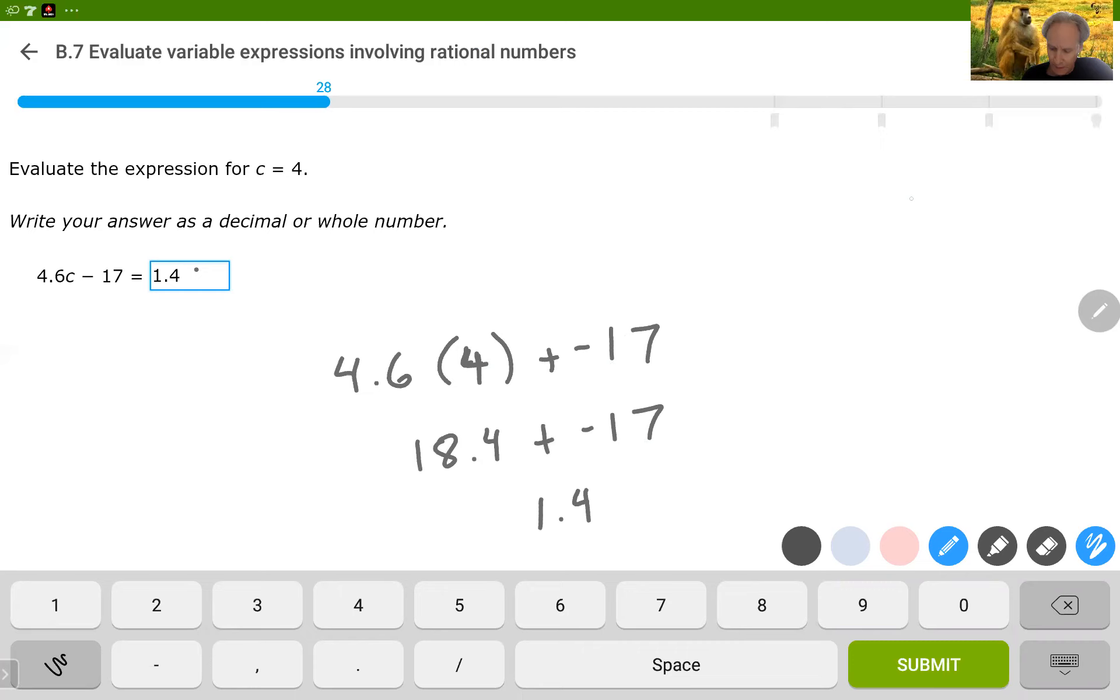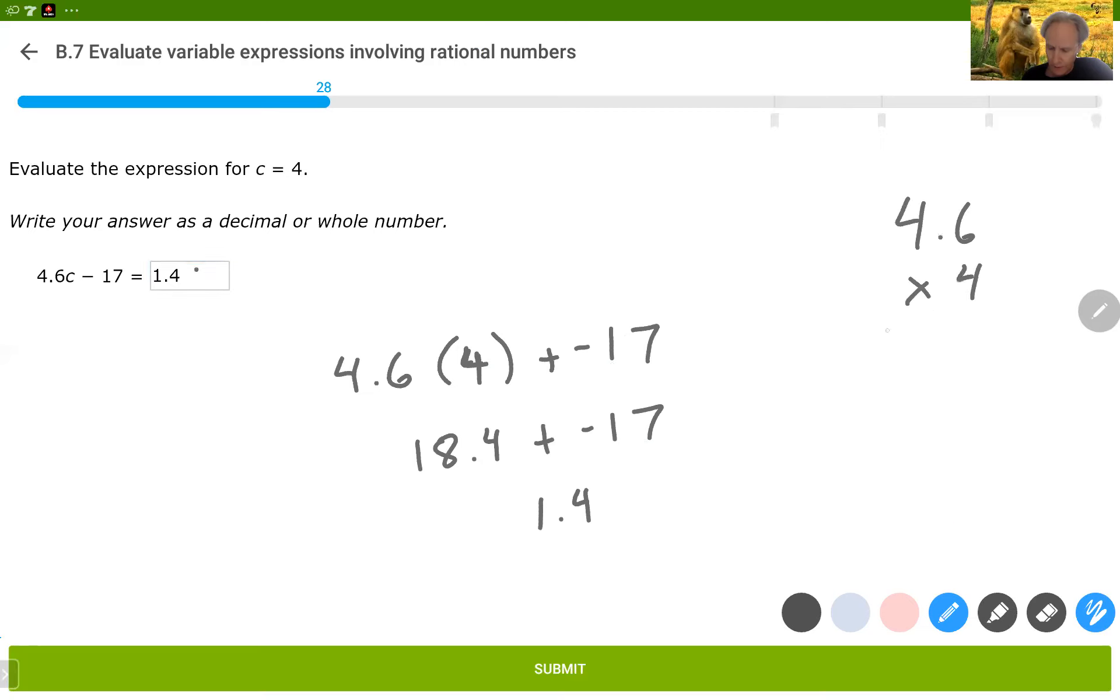4 times 4.6 is 18.4 plus negative 17 and that's going to be 1.4. By the way, when I did the 4.6 times 4, I did the carry in my head. It wasn't that hard. That is a 4, carry the 2, and that is 18.4. We had to move the decimal in place.